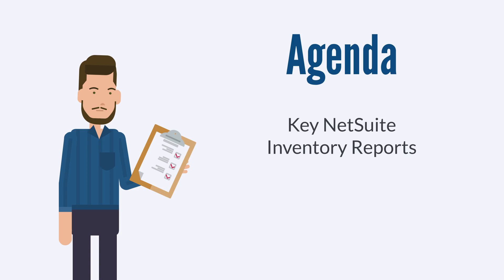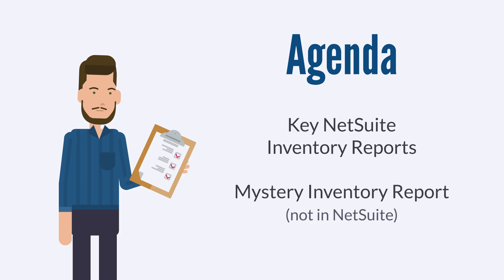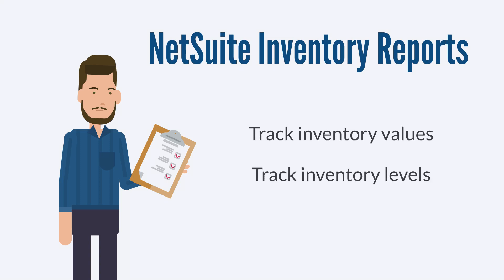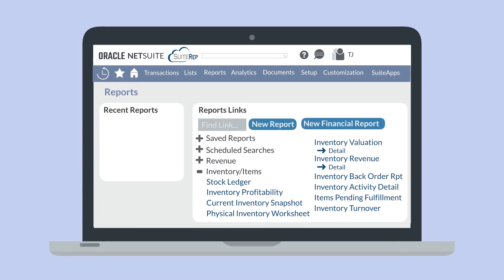At the end of the video, we'll also look at an inventory report that NetSuite does not provide, even though many companies would find it useful. Stick around to learn about what that report is and how you can get access to it. The available NetSuite inventory reports generally track two different aspects of your inventory: inventory values and inventory levels. To access any of the following reports, navigate to the reports dashboard and expand the inventory items section. Note that the reports visible in this list may differ based on the role that you are using in NetSuite.